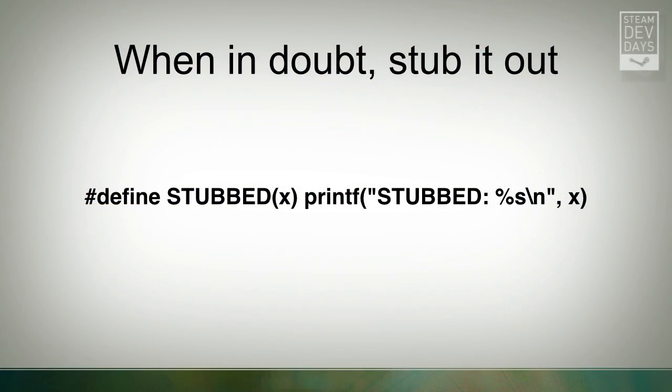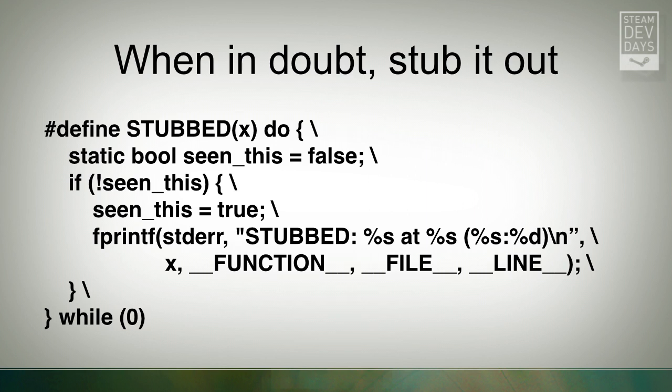Eventually you have a makefile, you have a compiler, the compiler starts building stuff, and inevitably there are a million warnings and a million errors. So there's a general policy for this — this is the mantra: when in doubt, stub it out. This is your new macro, your best friend. All this does is say: whenever you need to come back to something later, you type `STUBBED` and a little message about what is stubbed — like 'come back and implement the renderer' or 'figure out how to get total RAM in the system.'